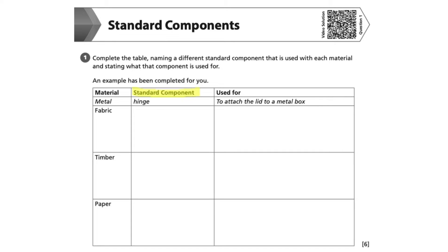Often, standard components include fastenings, fixings, electrical or mechanical parts, staples, screws, nuts, bolts, washers, zips, resistors, rivets and linkages — just some examples of many. Standard components are always generally widely available.